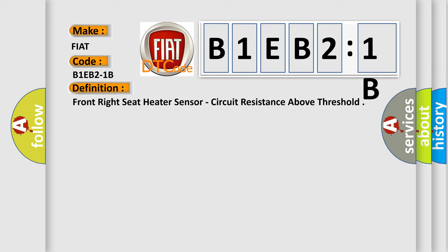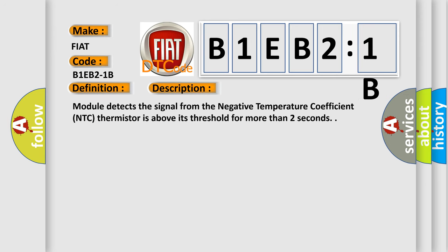And now this is a short description of this DTC code. Module detects the signal from the negative temperature coefficient (NTC) thermistor is above its threshold for more than two seconds.